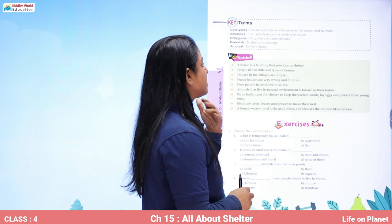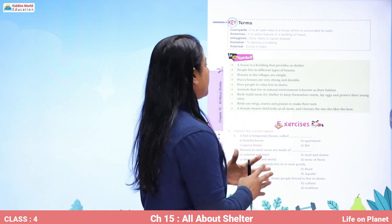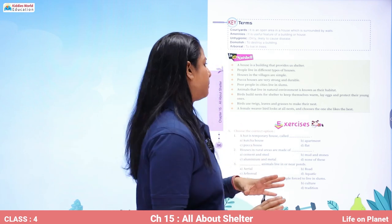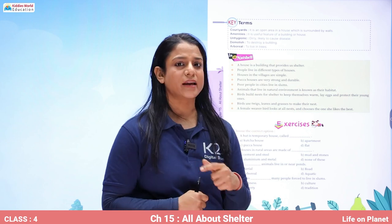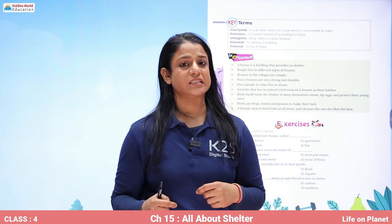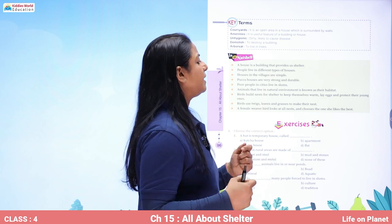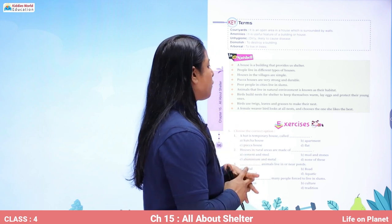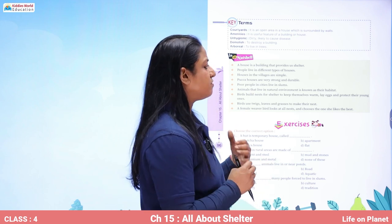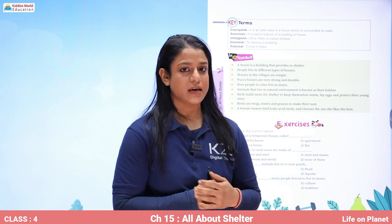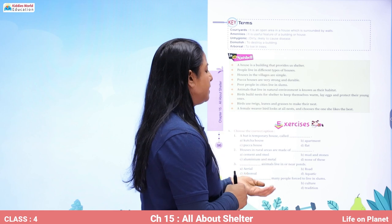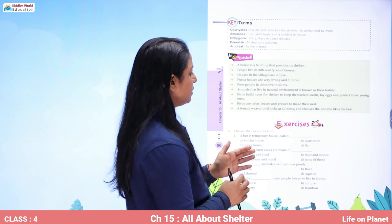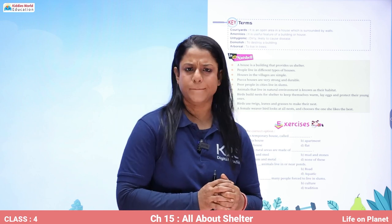Remember: a house is a building that provides us shelter. People live in different types of houses. Houses in villages are simple. Pakka houses are very strong and durable. Poor people in cities live in slums. Animals living in their natural environment is known as their habitat. Birds build nests for shelter to keep themselves warm, lay eggs, and protect their young ones. Birds use twigs, leaves, and grasses to make their nests. The female weaver bird looks at all the nests and chooses the one she likes best.